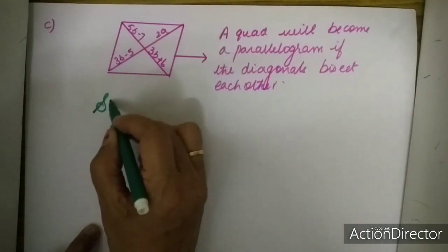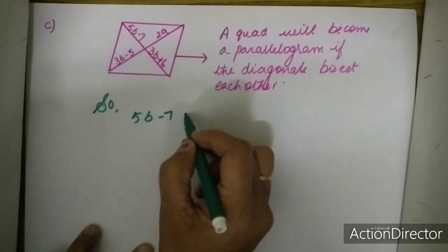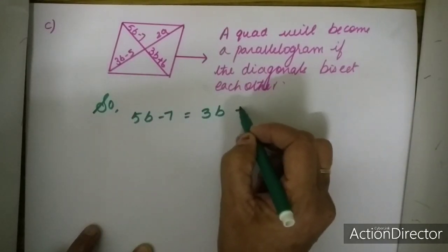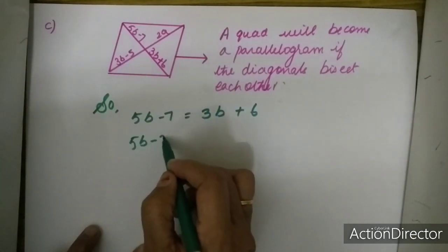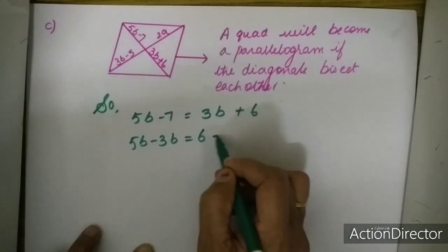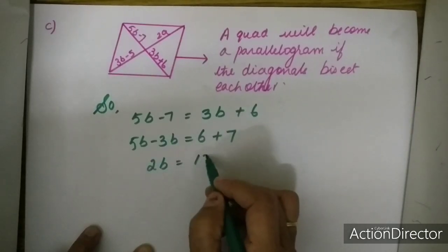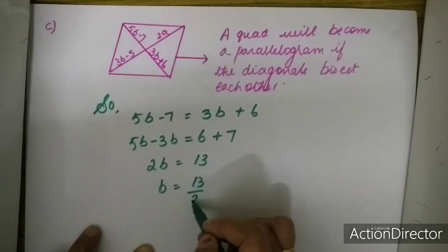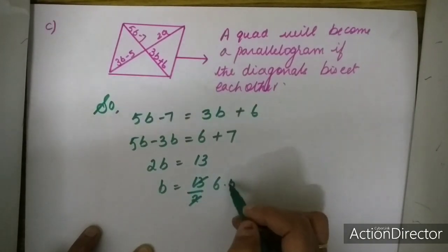So, 5B minus 7 is equal to 3B plus 6. Bringing B to the other side: 5B minus 3B is equal to 6 plus 7, so 2B is equal to 13, and B is equal to 13 by 2, which is equal to 6.5.